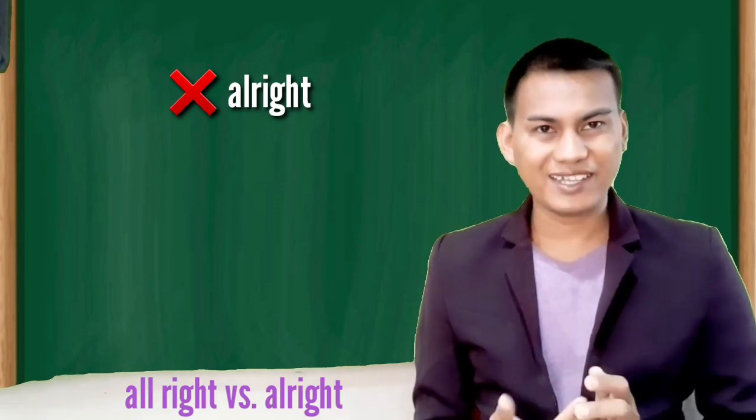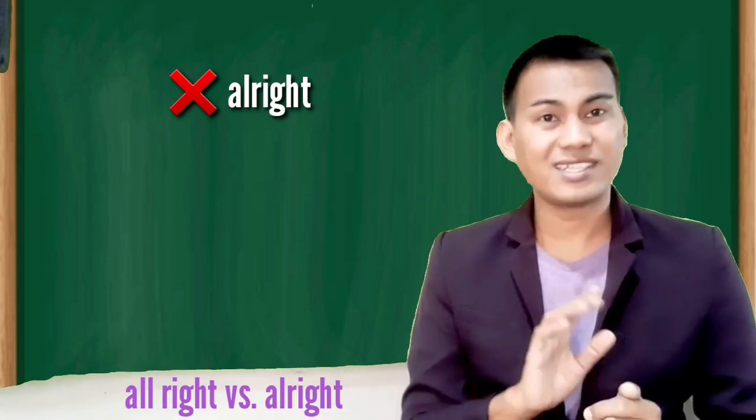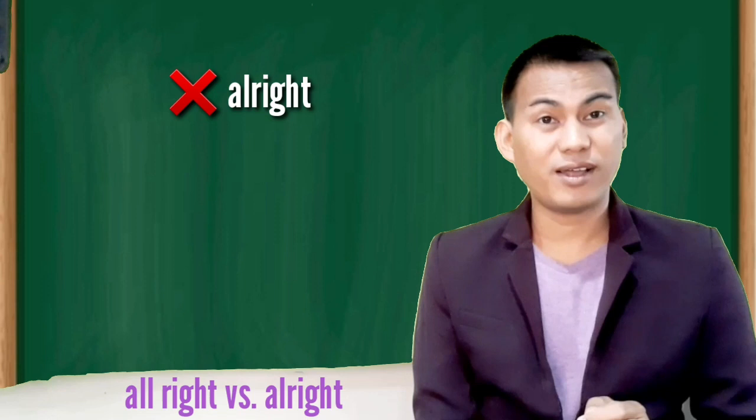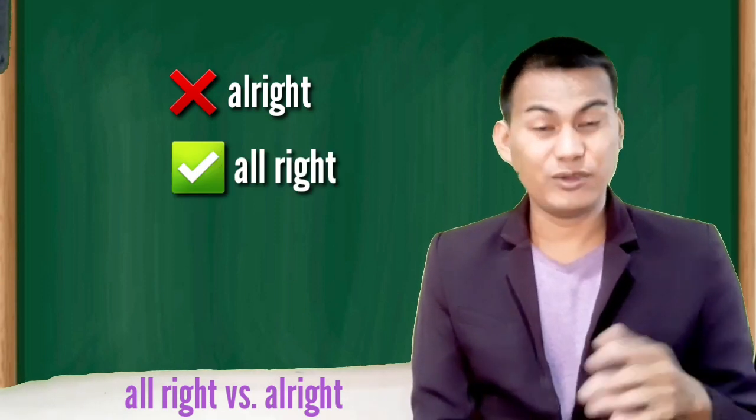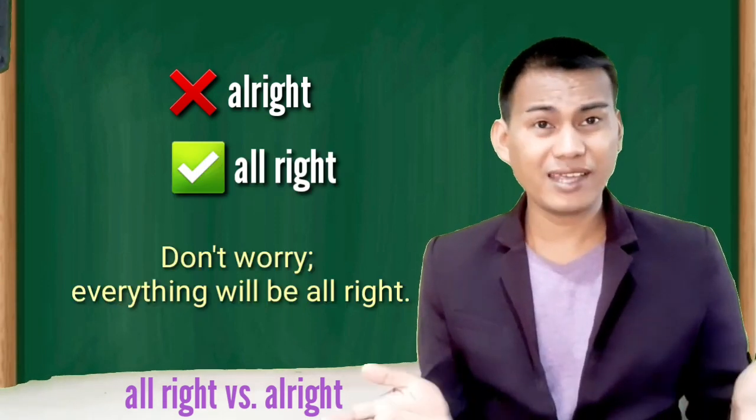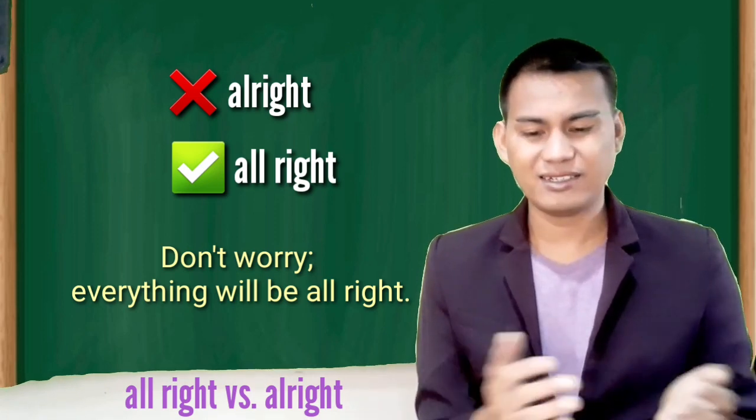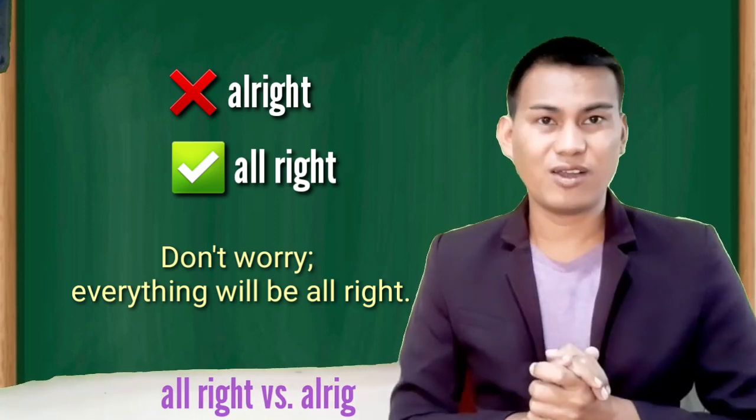Alright versus all right. The spelling alright, that's one word, is not acceptable in formal writing. Use all right. Are you all right? Are you okay? Are you fine? Don't worry, everything will be all right.